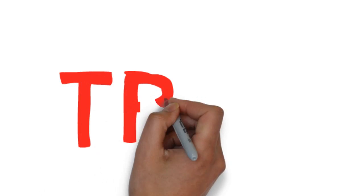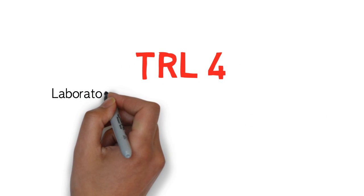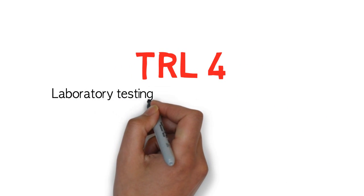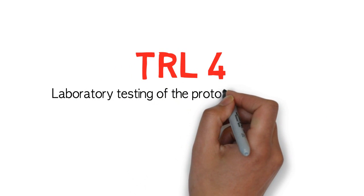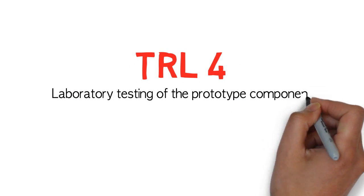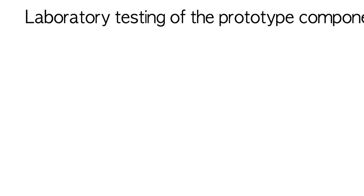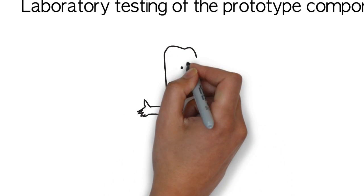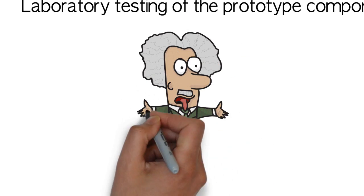TRL 4: Laboratory testing of a prototype component. Here, you test the rubber to see if it has appropriate wear characteristics.